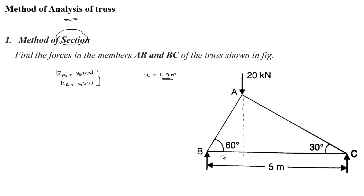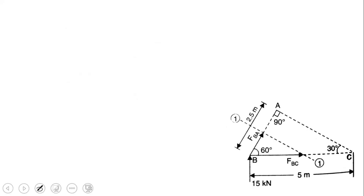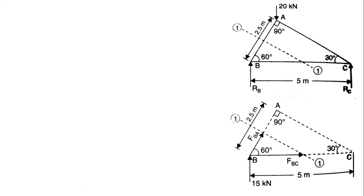Now we are going to solve the same problem using the method of sections. The values already calculated are: x equals 1.25 meters, RB equals 15 kilo Newton, and RC equals 5 kilo Newton. We need to find FAB and FBC. We draw a section line passing through members AB and BC, which are the members whose forces we want to calculate.